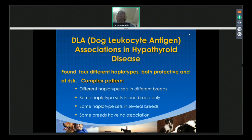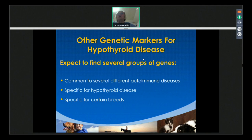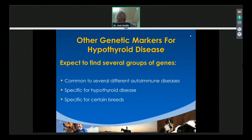There were other genetic markers for hypothyroid disease present in several groups of genes. These genes, like DLA, were common to several different types of autoimmune diseases — including Addison's disease, diabetes, hemolytic anemia, rheumatoid arthritis, thrombocytopenia, chronic active hepatitis, and thyroid disease — while some were specific for hypothyroidism and some were specific for certain dog breeds.